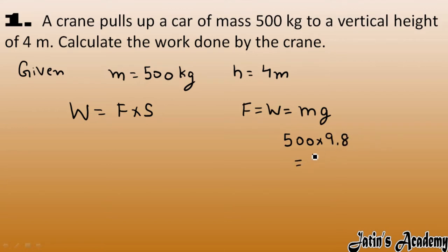Now work done: we have force, force is 4900, and displacement in this case we have height up to which it is raised, that is 4 meters. Now multiply this, we will get 19600 joule. So this is the work done by the crane pulling up a car of mass 500 kg.